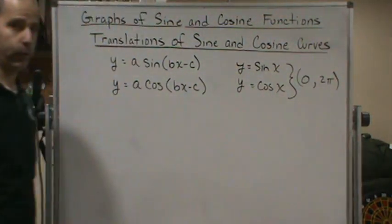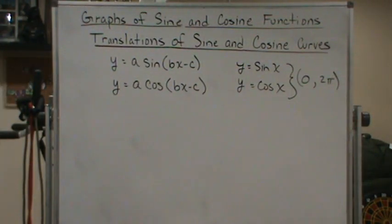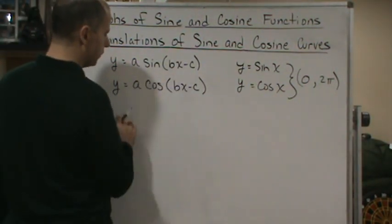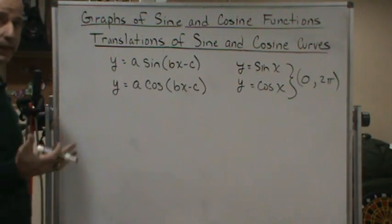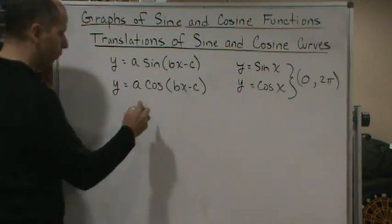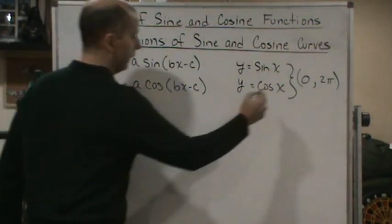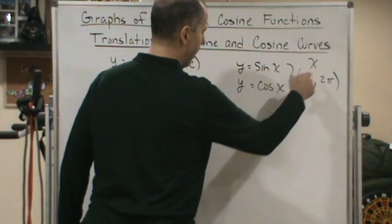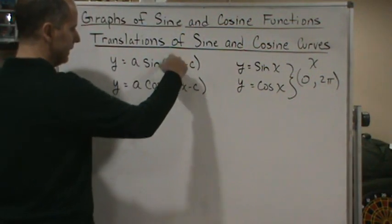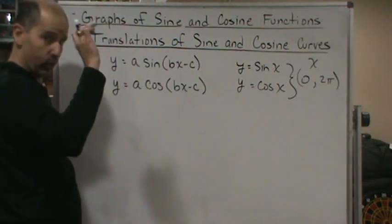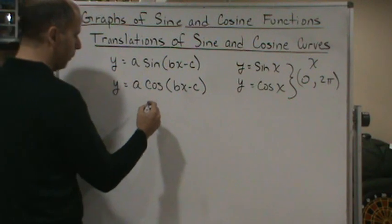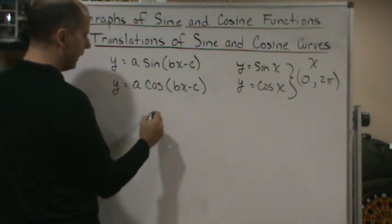We know that one cycle goes from zero to two pi, so these two functions will go one cycle when—here when x, but here x is this thing. What we're saying is that...